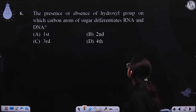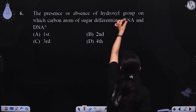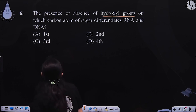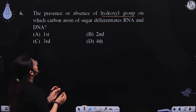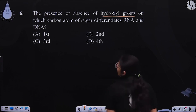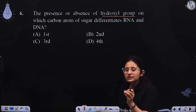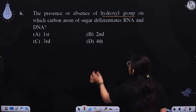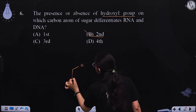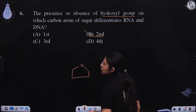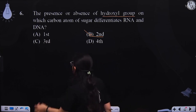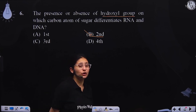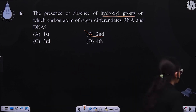The presence or absence of a hydroxyl group differentiates RNA and DNA. In DNA, the hydroxyl group is absent at the second carbon position of the sugar, whereas in RNA it is present. So the key difference lies in the second carbon position of the sugar.